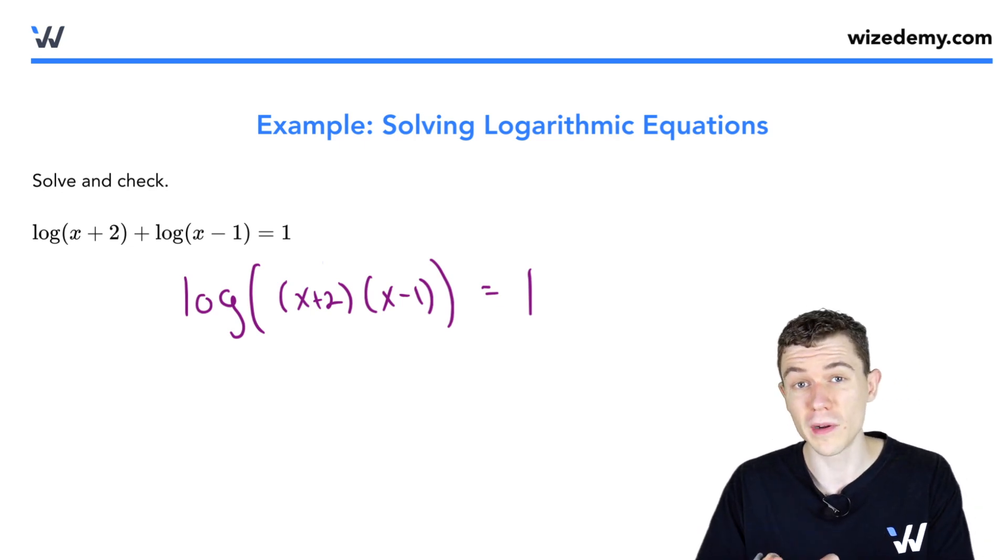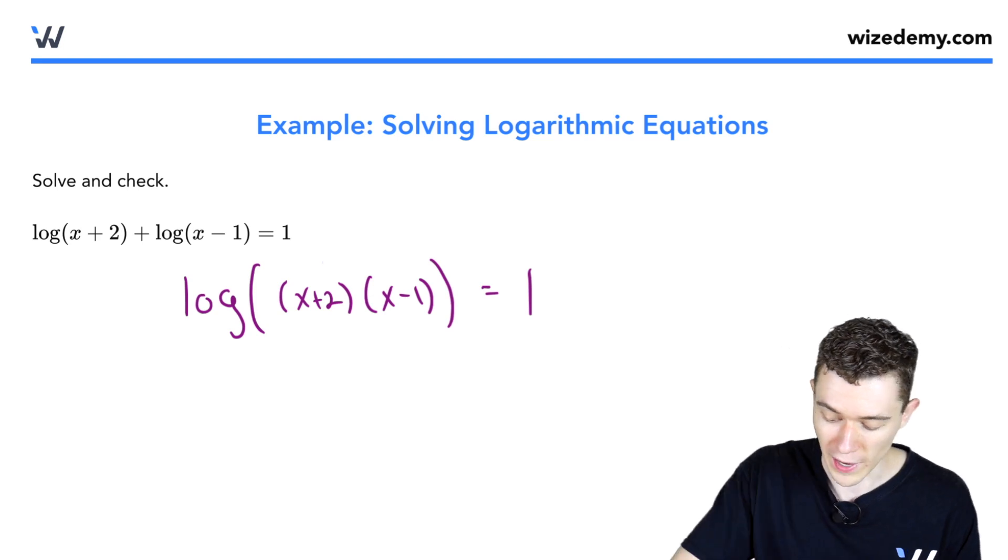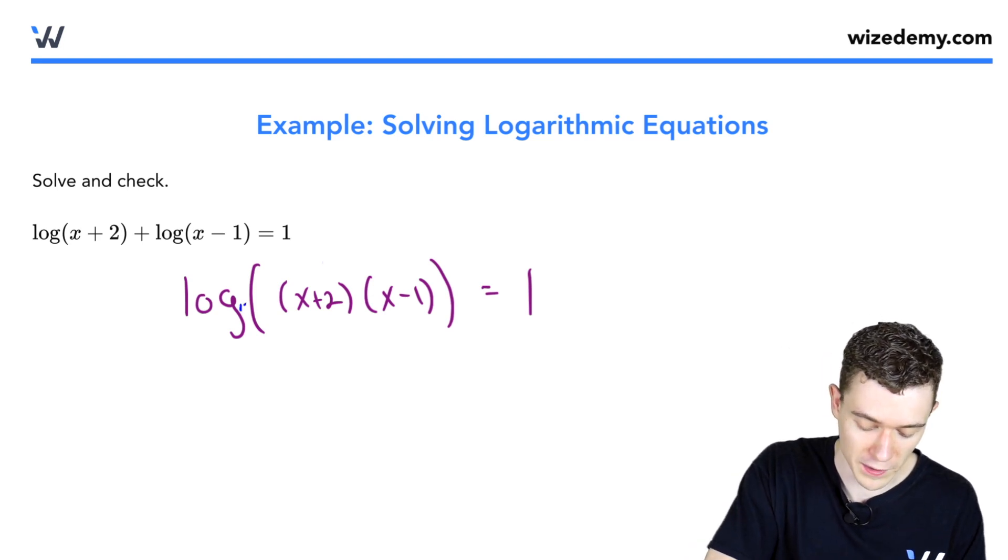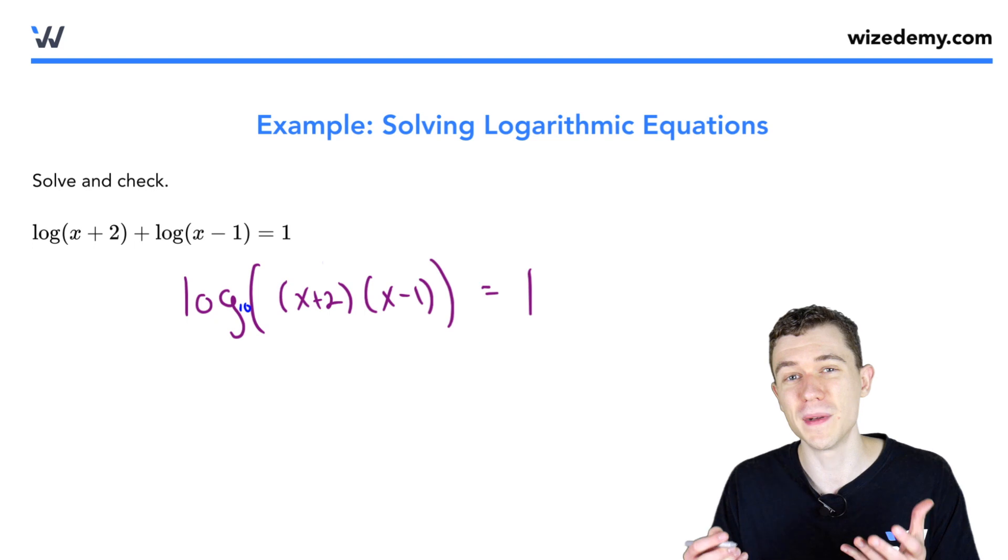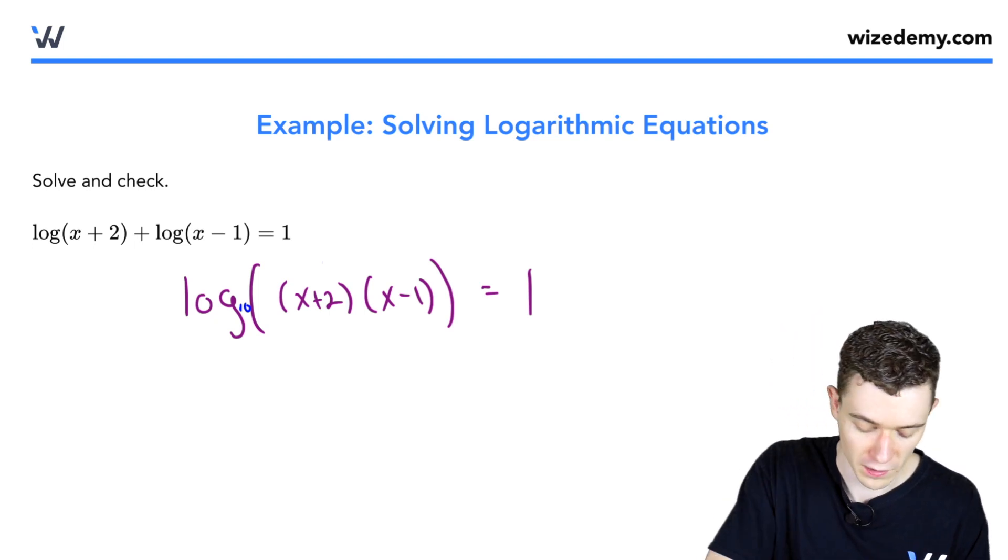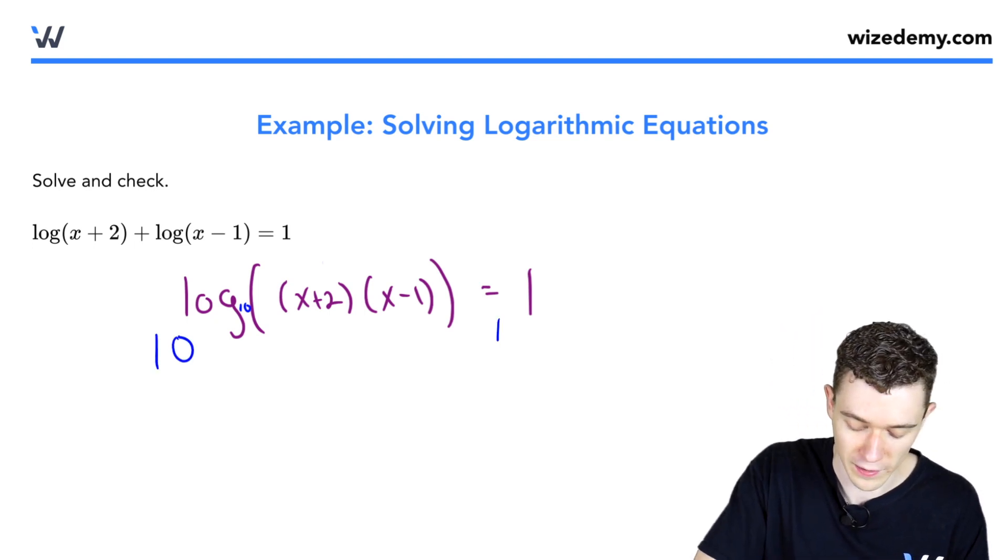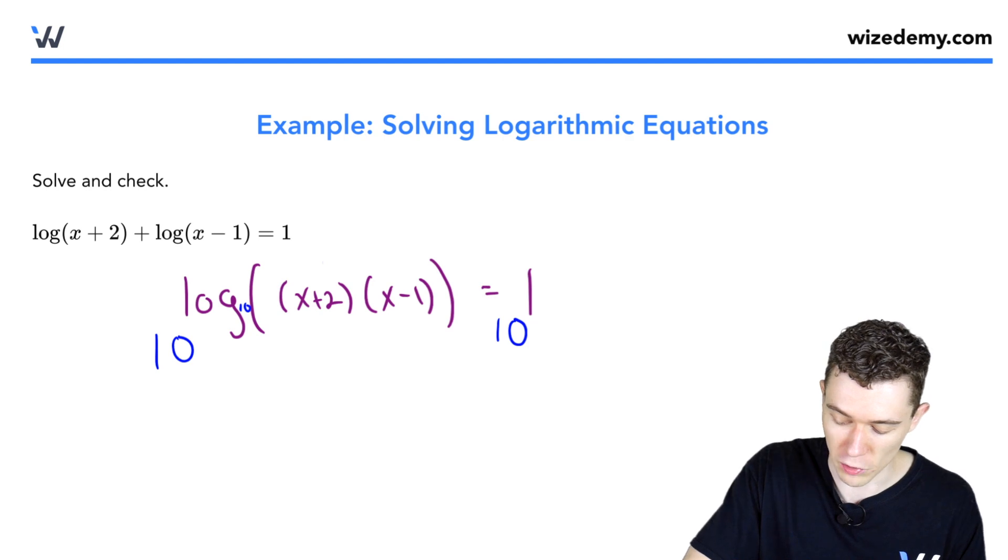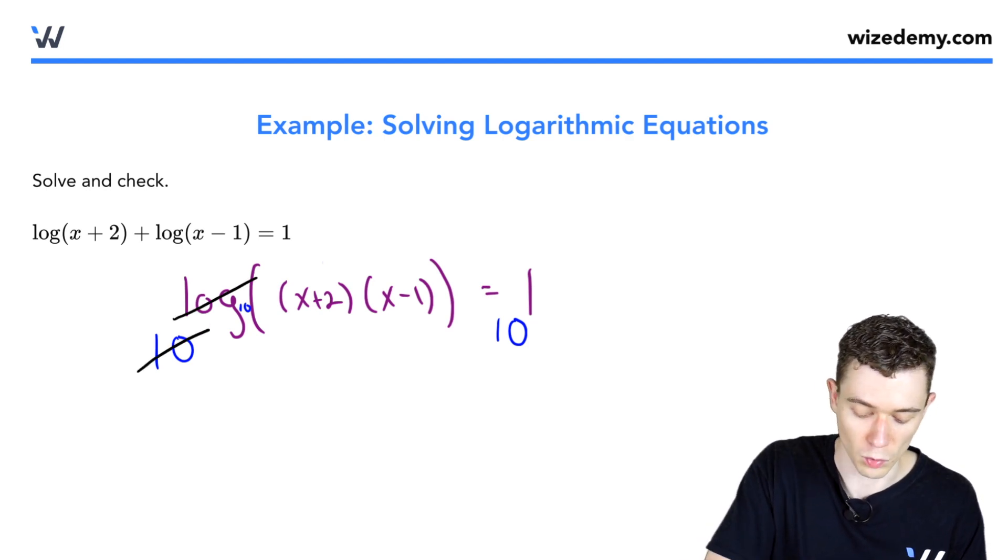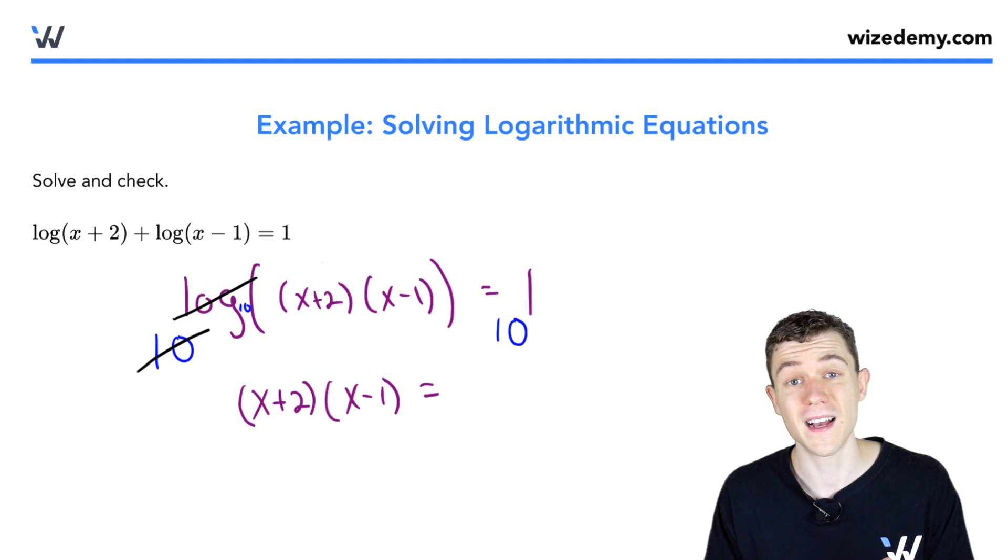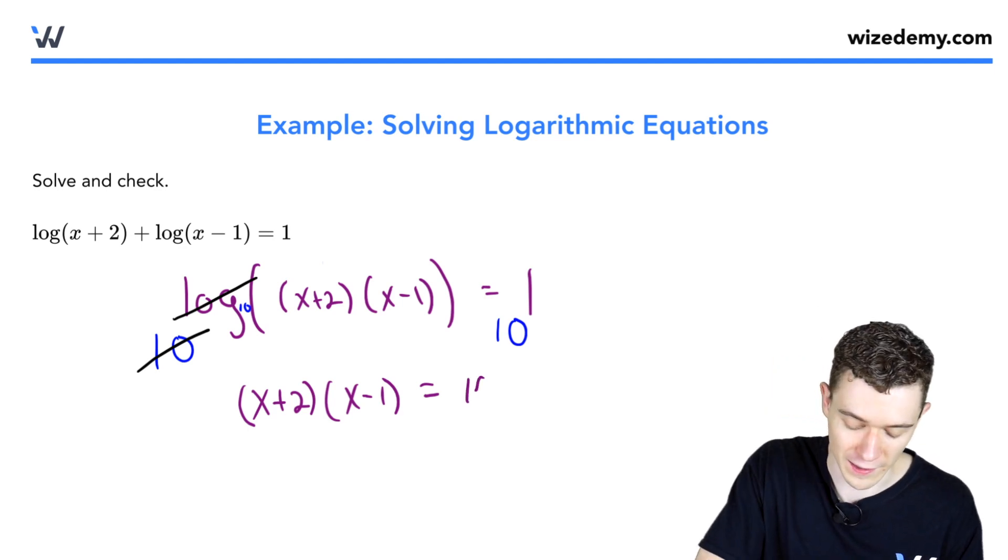Now we can undo the logarithm by rewriting this in the exponential form. Since log really means base 10, we're exponentiating both sides here. We put a 10 here and a 10 here, acting as the new base. Log base 10 and 10 go away. What we're left with on the left is just x plus 2 times x minus 1. On the right-hand side, 10 to the first, that's simply 10.